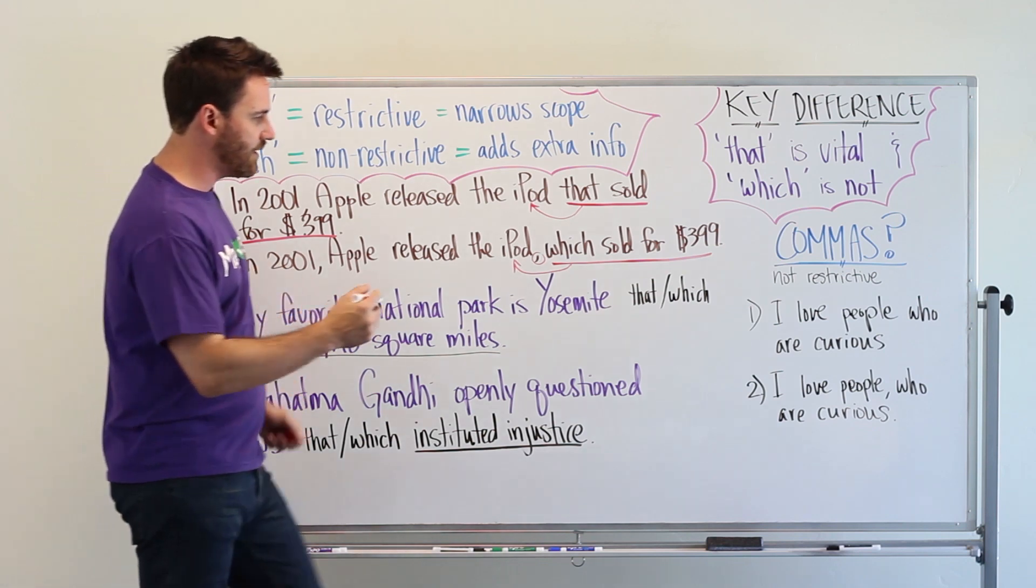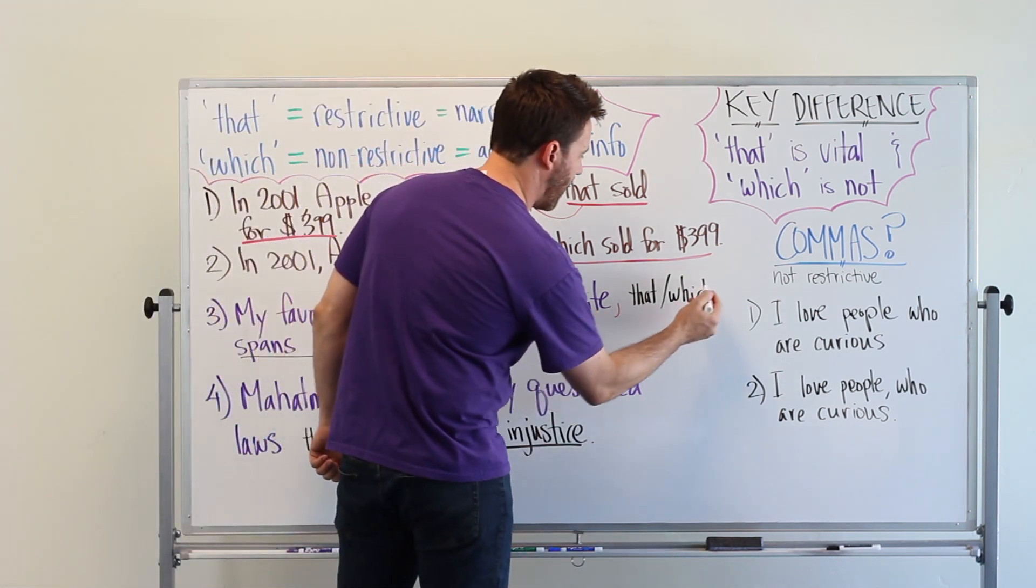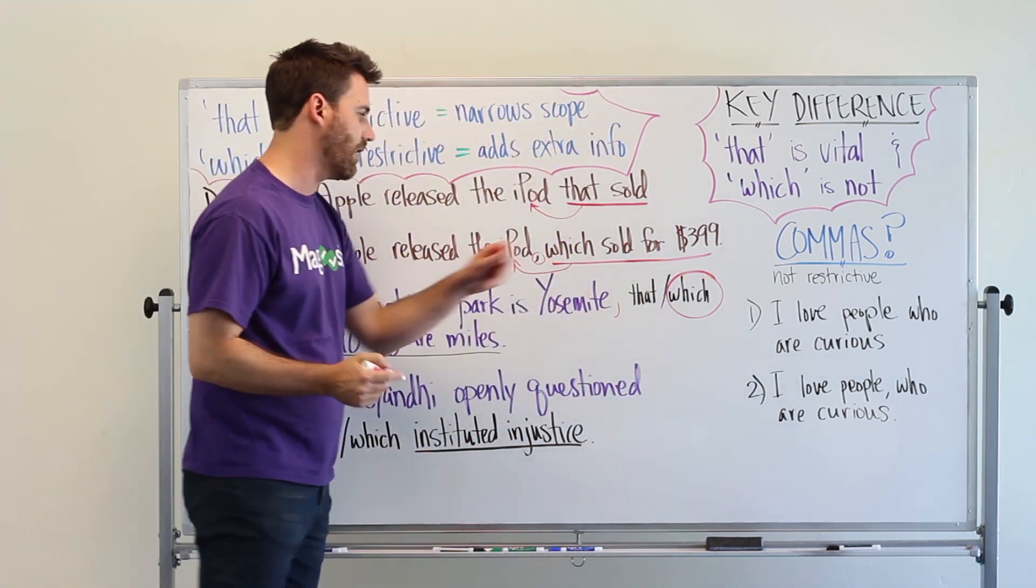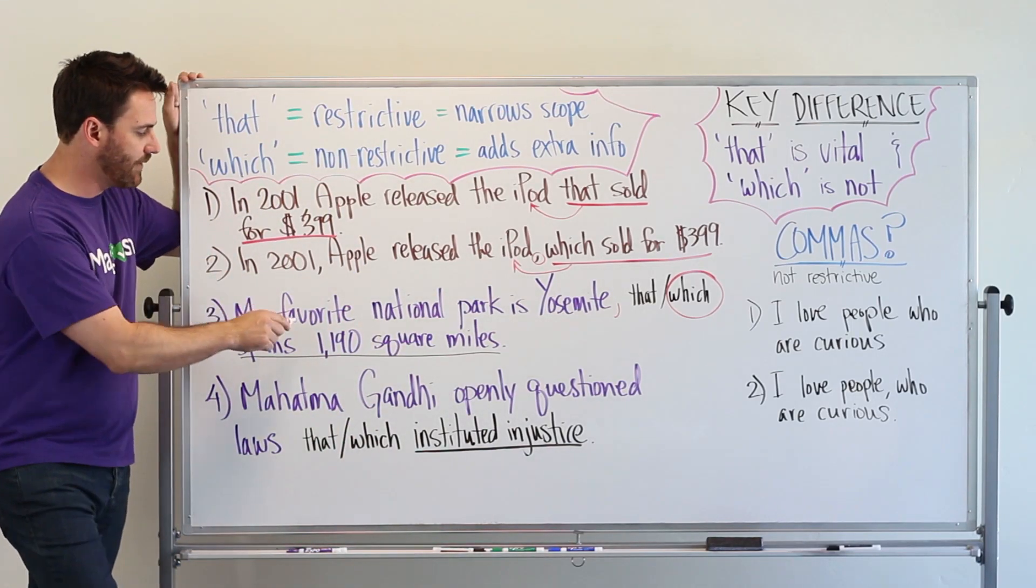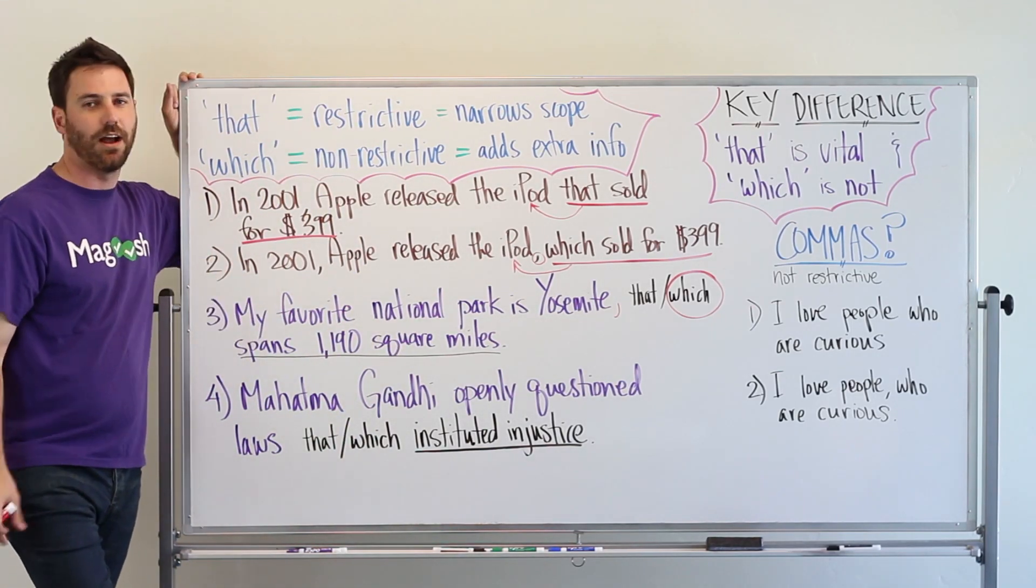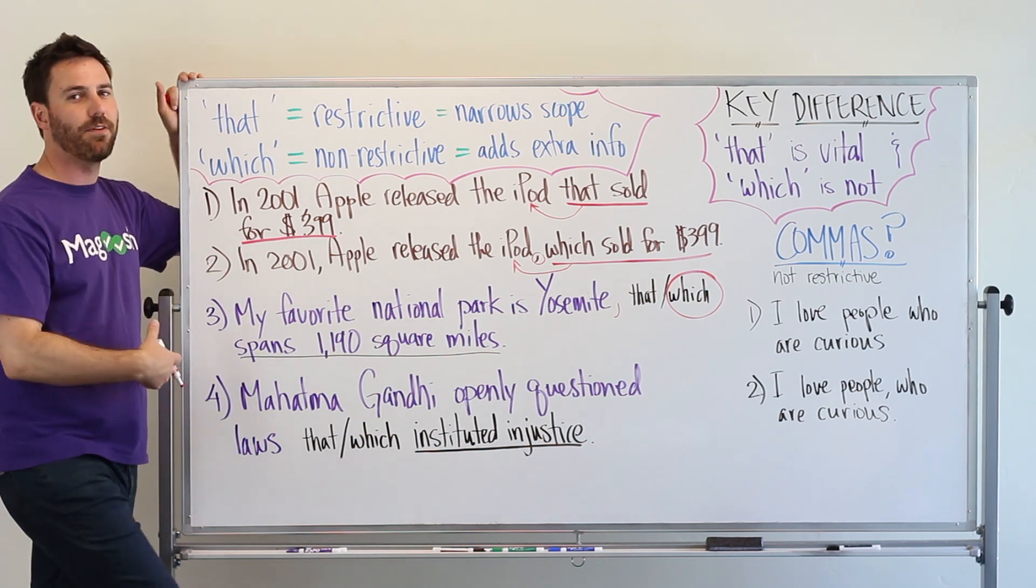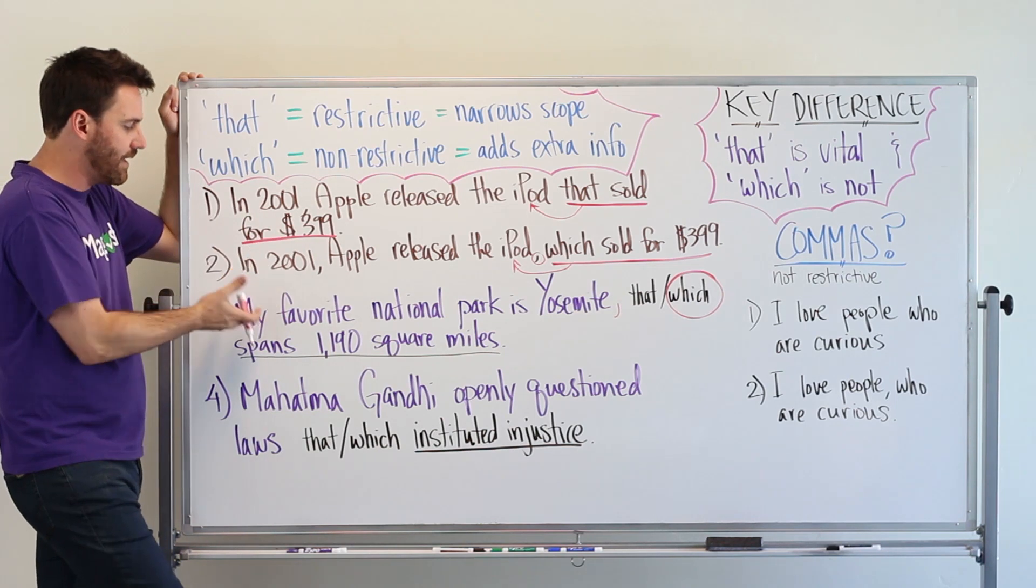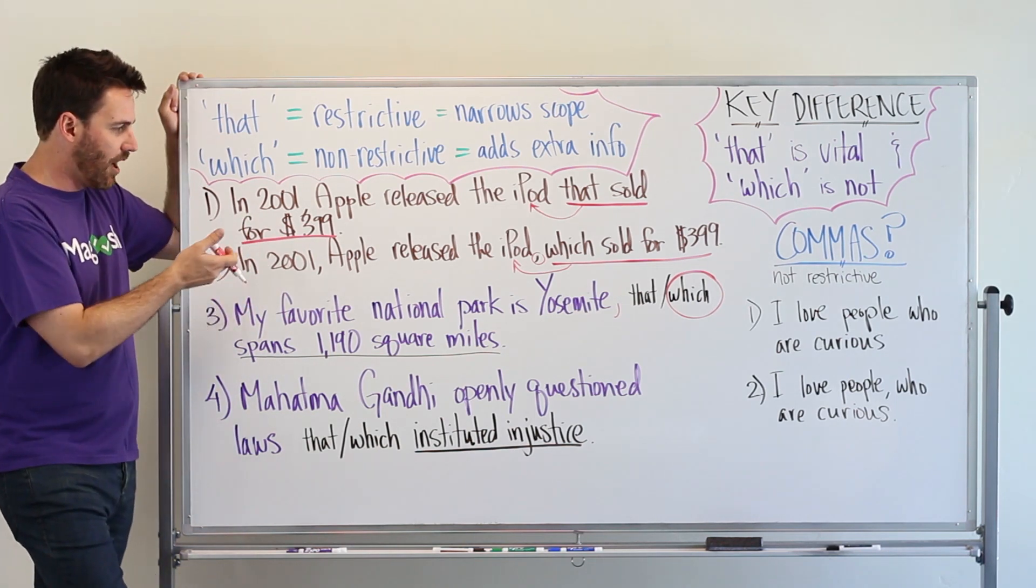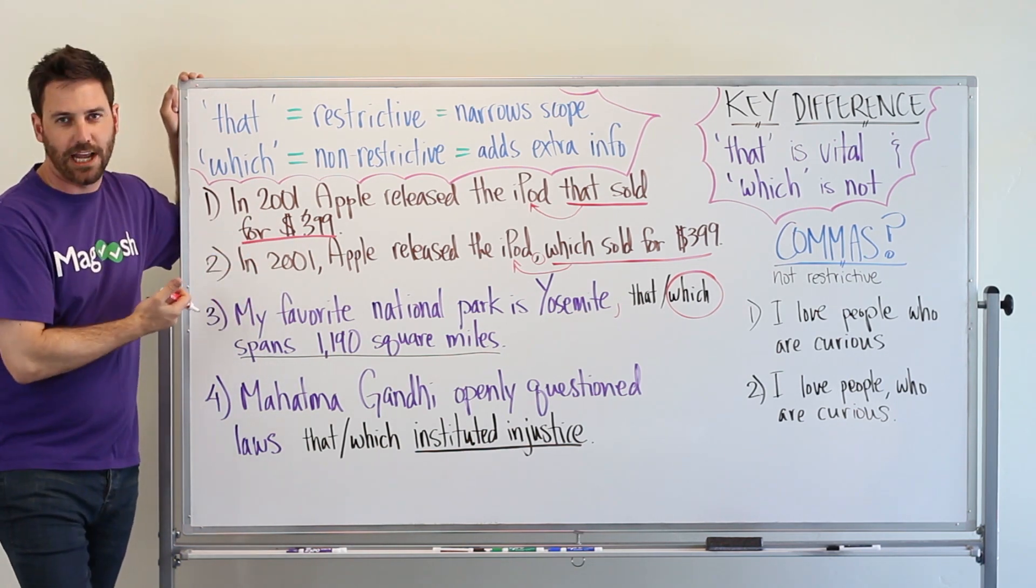So what that means is I'm going to choose to add a comma and choose which. Which comes with a comma. So my favorite national park is Yosemite which spans 1190 square miles. So a little extra information that we're providing to the reader about Yosemite. But really the essential point here is that Yosemite is my favorite national park.